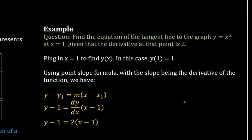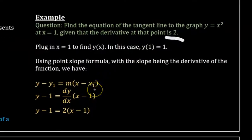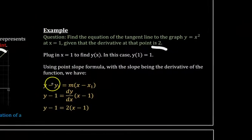Let's get into an example. We have a question that asks us to find the tangent line to the graph y equals x squared at x equals one given that the derivative at that point is two. So to solve this question we have to use point slope formula which is y minus y1 equals m the slope times x minus x1.